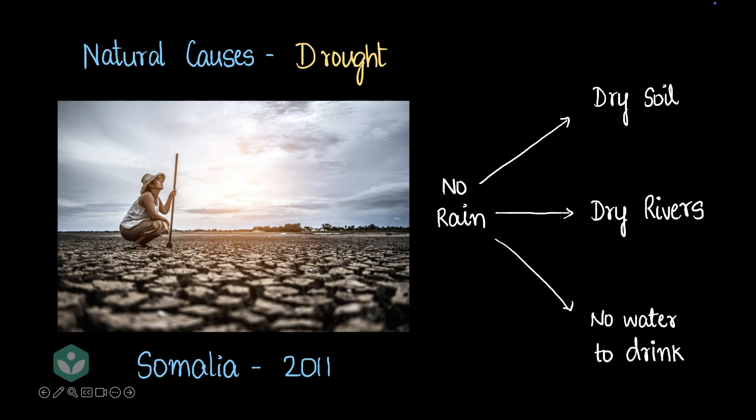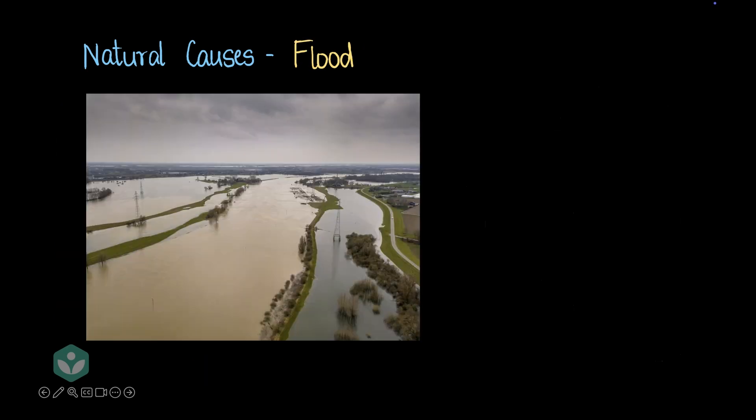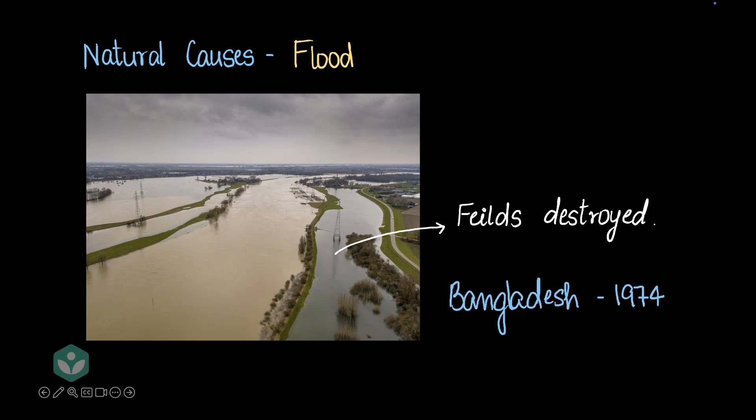One of the recent examples of drought-caused famine was in Somalia in 2011. Just as the lack of water can cause a famine, an excess of water can too. Floods can destroy fields — even a short flood of a few days or weeks can destroy the entire crop for the year, and sometimes even the crop for the next year. An example of a famine caused by flood is the Bangladesh famine in the 1970s.